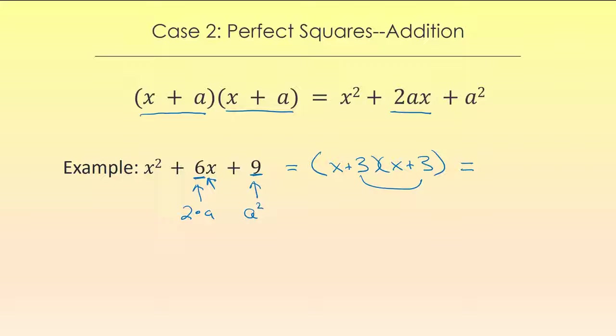And if you want to save yourself some work, you can write it like so, and then we get this. You can write it out as x plus 3 times x plus 3, or if you want a shortcut you can write it as x plus 3 squared.